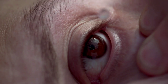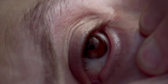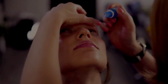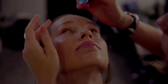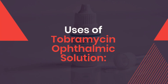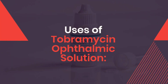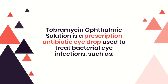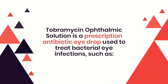Stay with us as we explore its uses, dosage, mechanism, and side effects. Tobramycin ophthalmic solution is a prescription antibiotic eye drop used to treat bacterial eye infections.